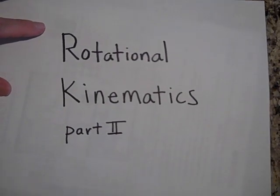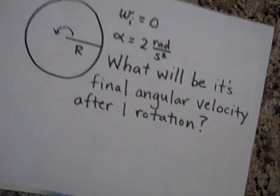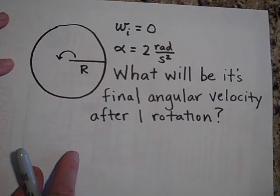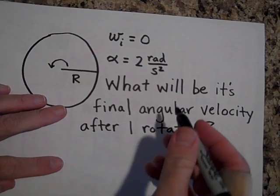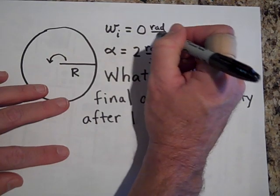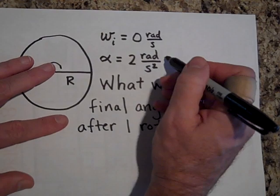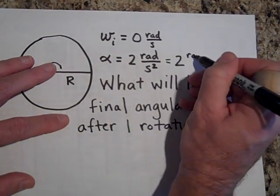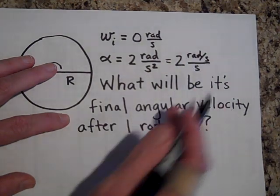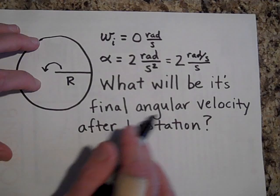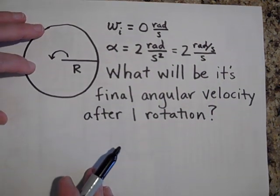We're back with rotational kinematics part two. Let's start with a simple problem. This thing is going to start to rotate and its initial angular speed omega is zero radians per second — so it's starting from rest. It has an angular acceleration alpha of two radians per second squared, meaning every second it will gain or lose two radians per second of omega. What will be its final angular velocity after one rotation?